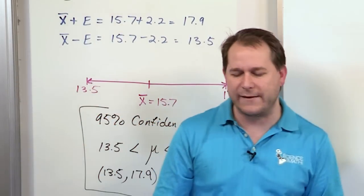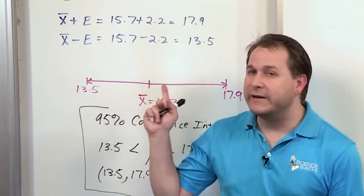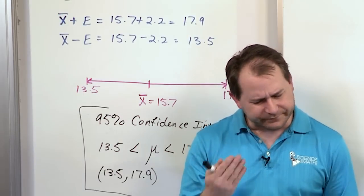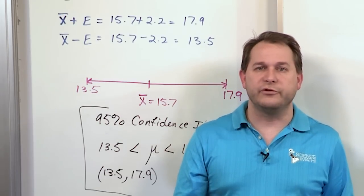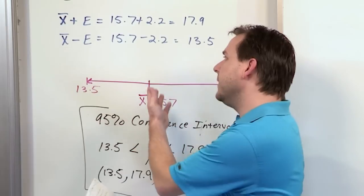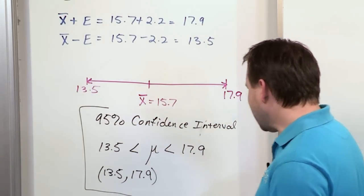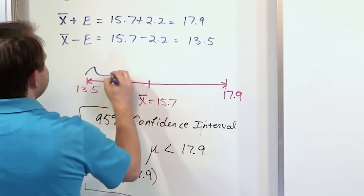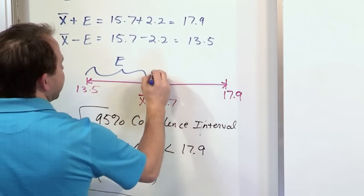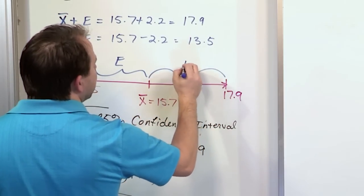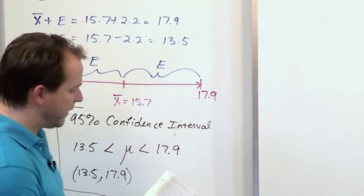Now, why is it a 95% confidence interval? Well, we haven't gotten into the details of that yet. In this problem, you were told that the margin of error was 2.2 hours at 95% confidence. So we're bypassing some details. In future problems, I'll give you the tools to calculate all that yourself. You just subtract the margin of error and add the margin of error. The distance from the point estimate to the lower value is the margin of error. The distance from the center to the upper part is also the margin of error. That's how you construct the confidence interval.